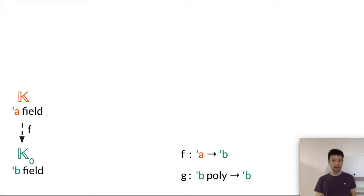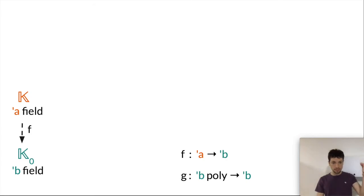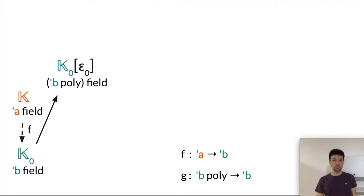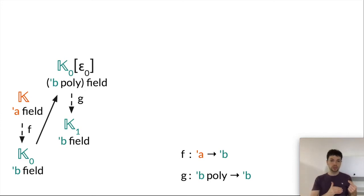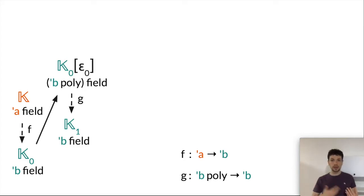The first step is to apply the function f to each of the elements of the field K. We end up with a field whose elements have type B. It is this field whose elements have type B that we are going to extend with a root, the root ε₀. We see again the transition of types from B to B poly field. What we do next is apply the function g — that's why we have g of type B poly → B. We apply g to each of the elements of this new field to return to something of type B field. So each time we add a root, we can return to the type B field, and we never get uglier types at each step.